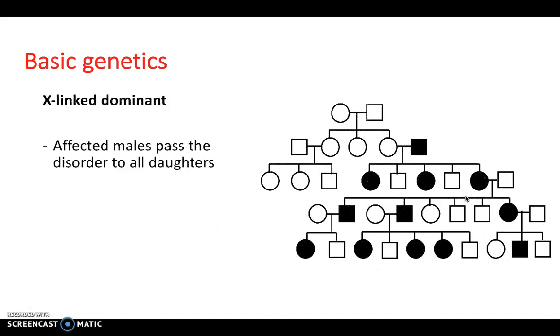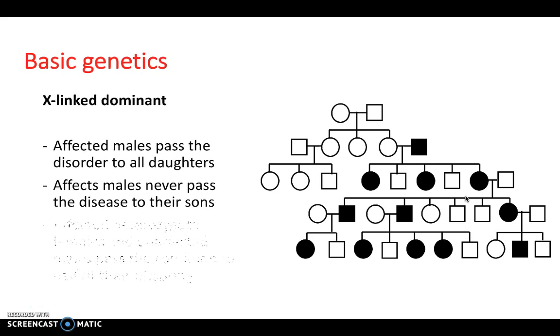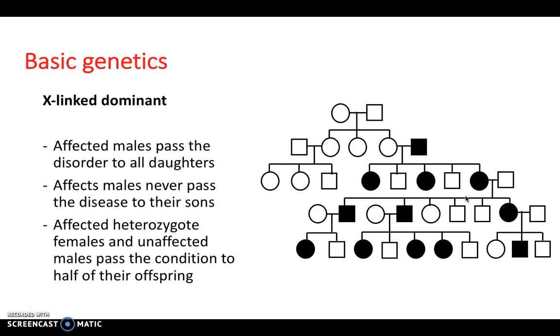You can also have X-linked dominant. So affected males pass the disorder to all daughters. Affected males never pass the disease to their sons. And affected heterozygote females and unaffected males pass the condition to half of their offspring. An example here is fragile X syndrome. These are less important to be able to spot on a pedigree diagram than the classic autosomal recessive and autosomal dominant.